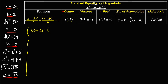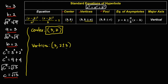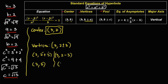Center is (h, k), so h is 3 and k is 2. This is the coordinate of the center. For the vertices, we have (h, k ± a), so (3, 2 ± 3). Simplifying: (3, 5) and (3, negative 1). These are the coordinates of the vertices.